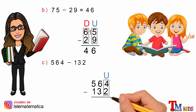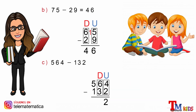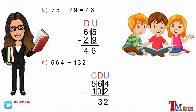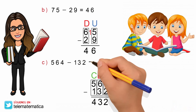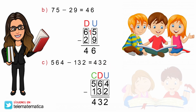4 menos 2 es igual a 2. En tercer lugar, identificar la columna de las decenas y restar: 6 menos 3 es igual a 3. Y en cuarto lugar, identificar la columna de las centenas y restar: 5 menos 1 es igual a 4. Y este resultado lo escribimos en la operación de 564 menos 132.